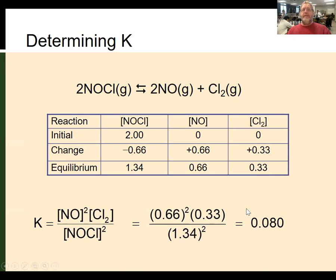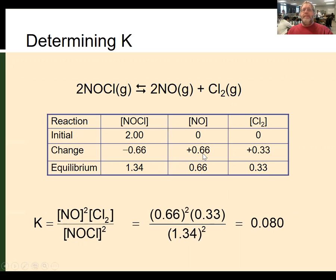This requires us to understand what's going on in the ICE table. Initial concentrations, if not given, are generally assumed to be zero — but make sure you read the problem correctly, because sometimes they're not always zero. The change is what occurs during the reaction, and usually you're given one. If you know one change, you can use stoichiometry to find the change for everything else. Finally, equilibrium values are what we place into our equilibrium constant expression to do the calculations.